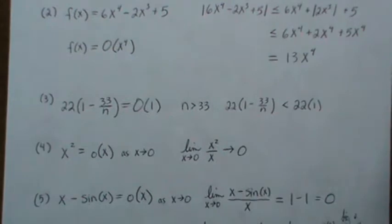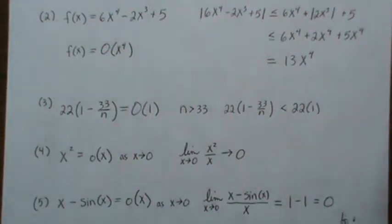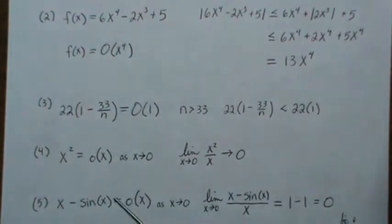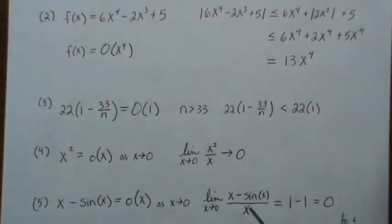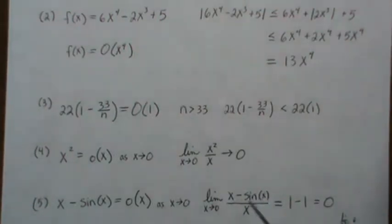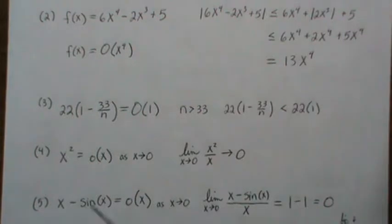Now a series of interesting examples. Example 6: we start looking at moment-generating functions. So x − sin(x) is little o of x as x goes to 0. You can show that by this ratio: x/x goes to 1, and then minus sin(x)/x is that famous limit which goes to 1, giving 0. So that's saying that x dominates (x − sin(x)), that this gets really small faster than just x.